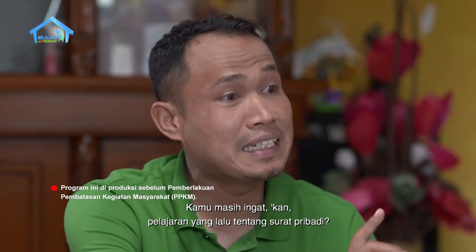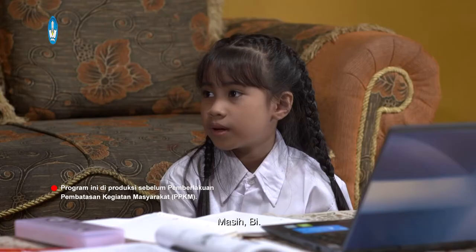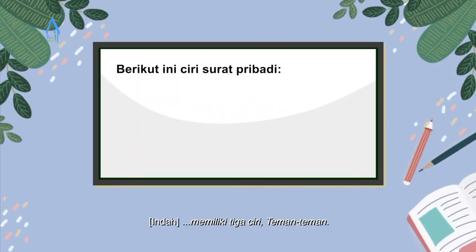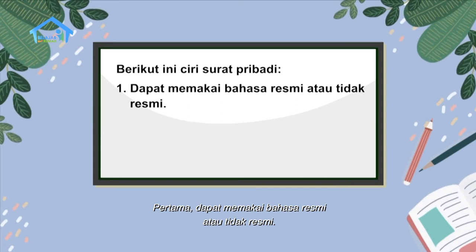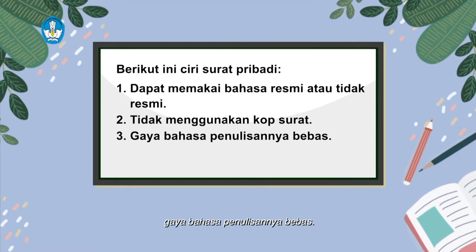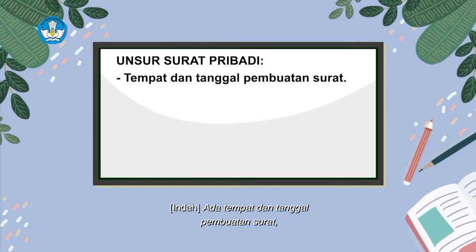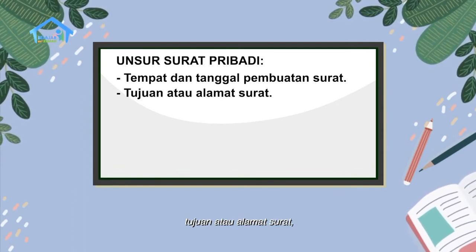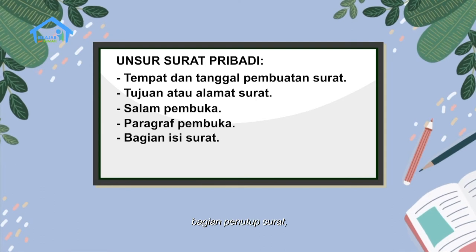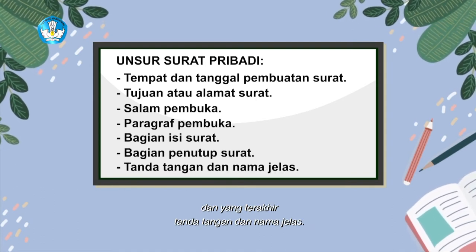Kamu masih ingat kan pelajaran yang lalu tentang surat pribadi? Teman-teman juga pasti masih ingat kan? Indah ingatkan kembali ya. Surat pribadi itu memiliki tiga ciri. Pertama, dapat memakai bahasa resmi atau tidak resmi. Kedua, tidak memakai kop surat. Dan yang ketiga, gaya bahasa penulisannya bebas. Lalu, unsur-unsur di dalam suratnya ada: tempat dan tanggal pembuatan surat, tujuan atau alamat surat, salam pembuka, paragraf pembuka, bagian isi surat, bagian penutup surat, dan yang terakhir tanda tangan dan nama jelas.